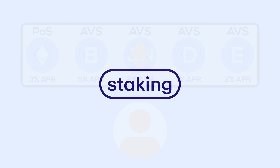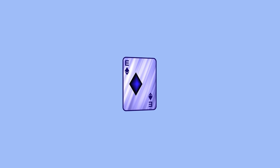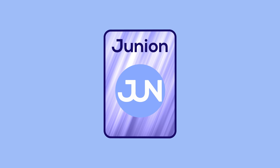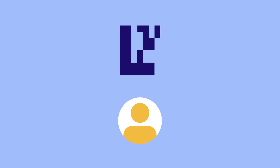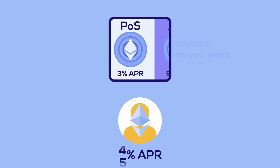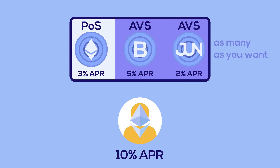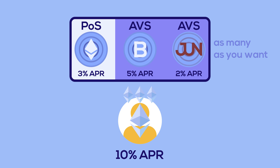Eigenlayer aims to solve this through the concept of restaking. Basically, you stake your ETH, then you stake it again — and again. Here's the core of Eigenlayer: you, the user, first stake to earn the base 3% yield for securing Ethereum. Then you can choose other commitments to participate in using the same stake. Run their software and earn their rewards — but act wrongly in any of them and get slashed.